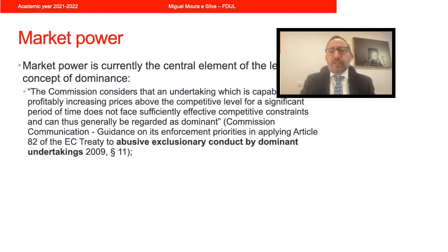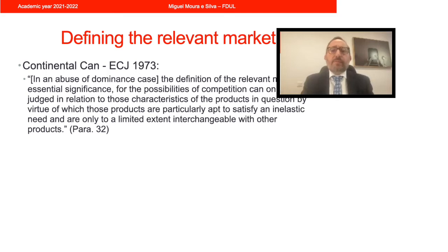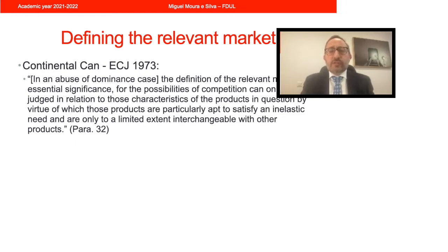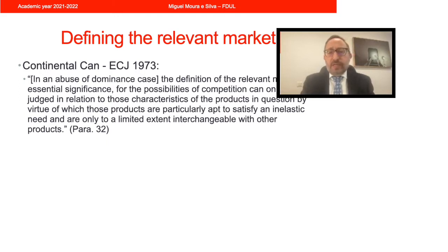Relevant market definition is something the Court of Justice has long established as a necessary step in the analysis of dominance. The Continental Can judgment, paragraph 32, makes clear that it is of essential significance to define the boundaries of the market and to identify all the relevant competitive constraints faced by a firm, in order to ascertain whether or not that firm holds a dominant position.